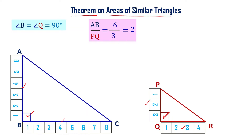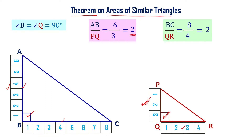AB by PQ is 6 units divided by 3 units, which is equal to 2. So AB by PQ equals 2 to 1. Now BC by QR is 8 by 4, where BC is 8 units and QR is 4 units. So 8 by 4 equals 2 to 1.